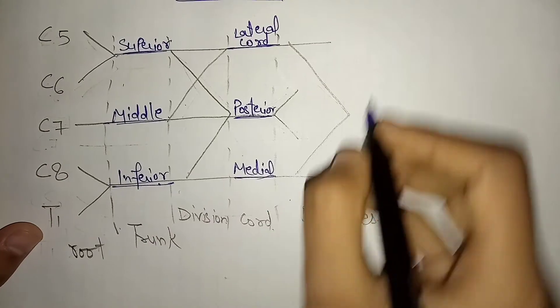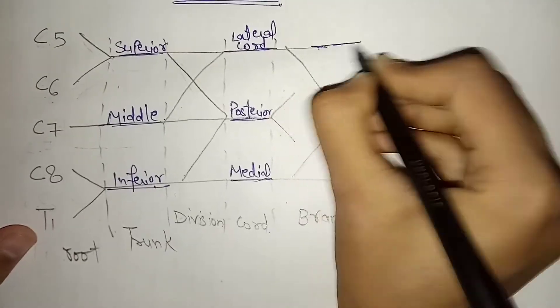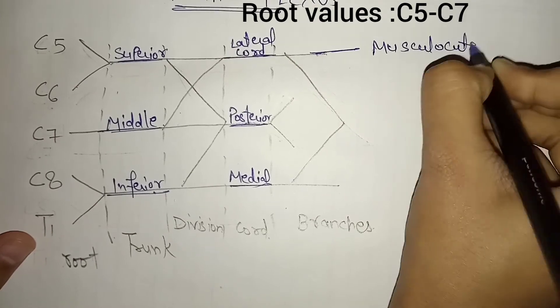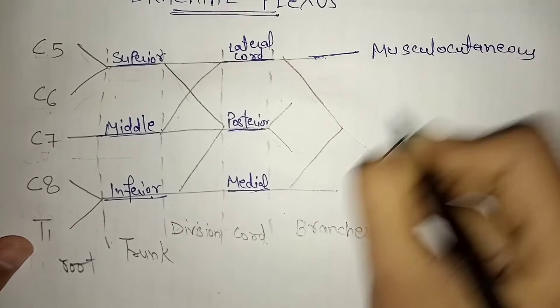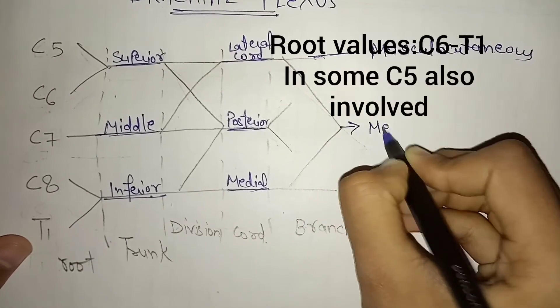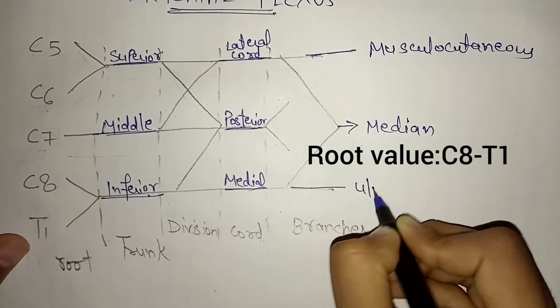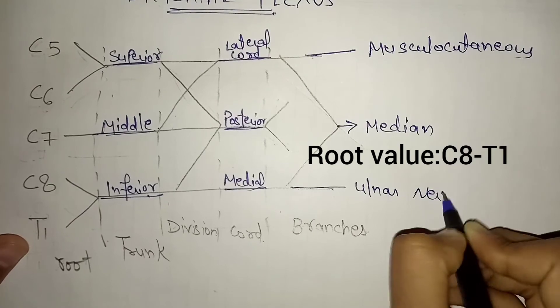Talking about the main branches of nerve, musculocutaneous nerve arises from lateral chord, then we have median nerve arising from lateral and medial chord, then we have ulnar nerve arises from medial chord.